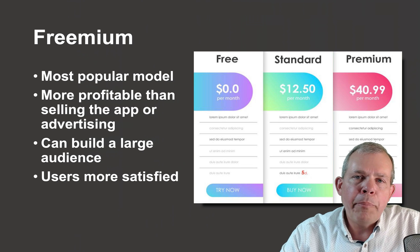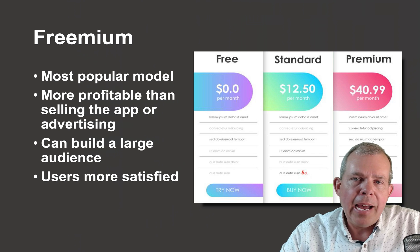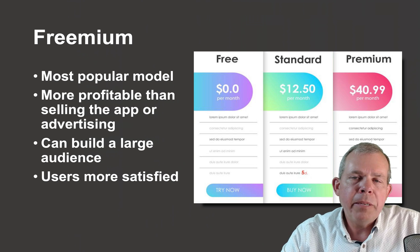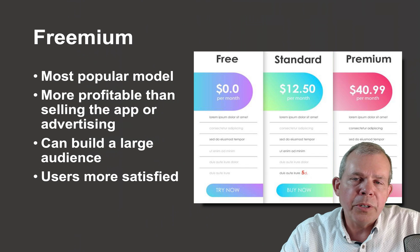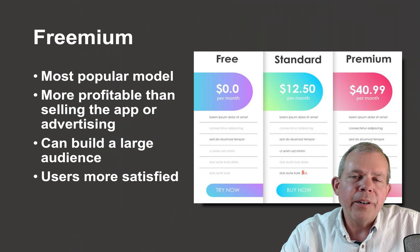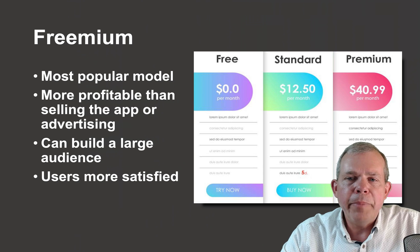Freemium is probably the best and most popular model for making money. It's more profitable than selling your app outright or putting ads on it. You can also create a large audience because everyone gets to try your app for free. If they bump into features they really want, they might pay a subscription or fee to get them. If they've tried it, use it, and pay for the premium part, you've got a true fan. Don't give away all the great features at the beginning — hide some critical ones while still giving users an experience to try.